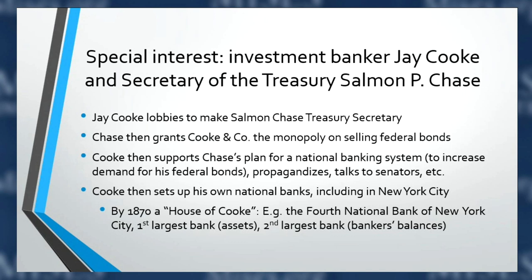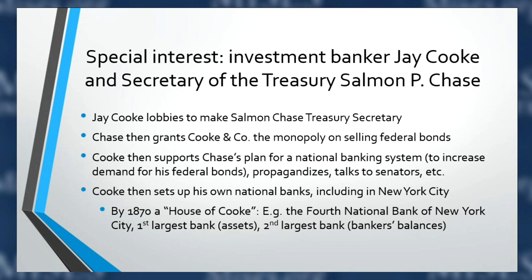Then Cooke supported Chase's subsequent plan for a national banking system, because if banks had to buy federal bonds to issue banknotes, they'd buy them from Cooke & Co. Then Cooke set up his own national banks, including in New York City. By 1870, Jay Cooke had transformed himself into the most prominent banker in the country — the 'House of Cooke.' The Fourth National Bank of New York was really Cooke's bank — the largest bank in terms of assets and second largest in terms of bankers' balances — acting as that quasi-central reserve city bank. He helped set up this system and was directly profiting from it.